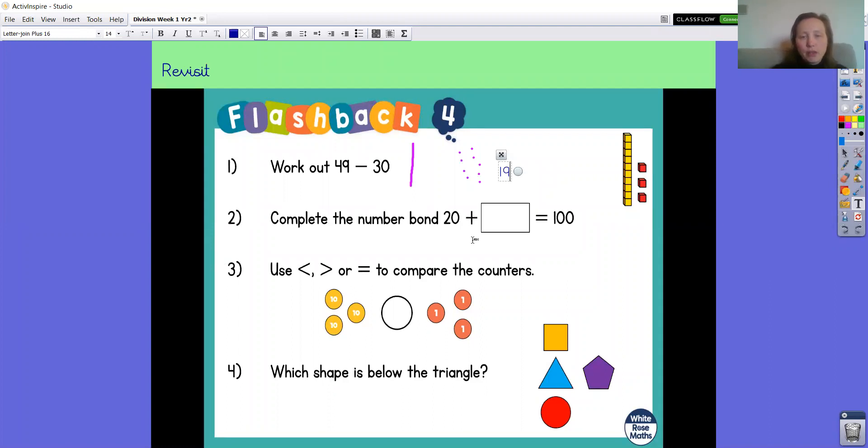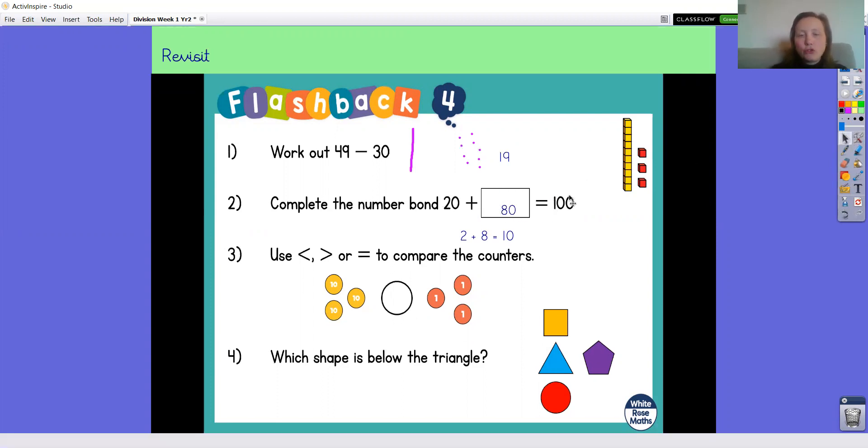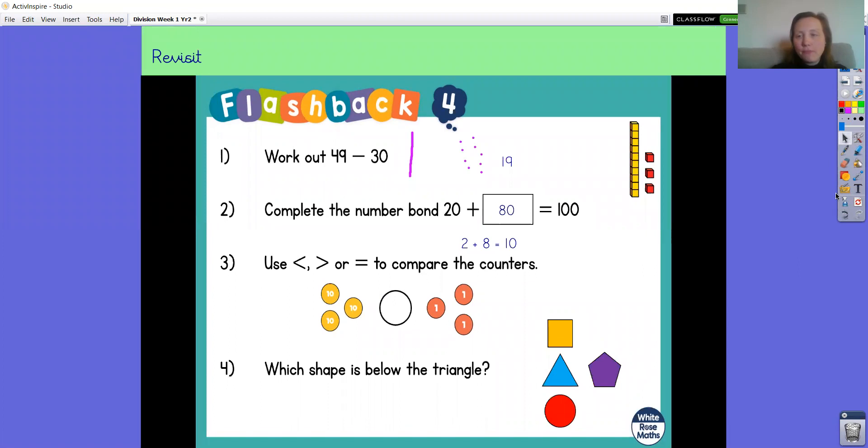Let's have a look at 20 add something equals 100. Well, I know that 2 add 8 equals 10. I think that can help me. If I know 2 add 8 is 10, then 20 add 80 will make 100. Sorry, I've got my words muddled there.